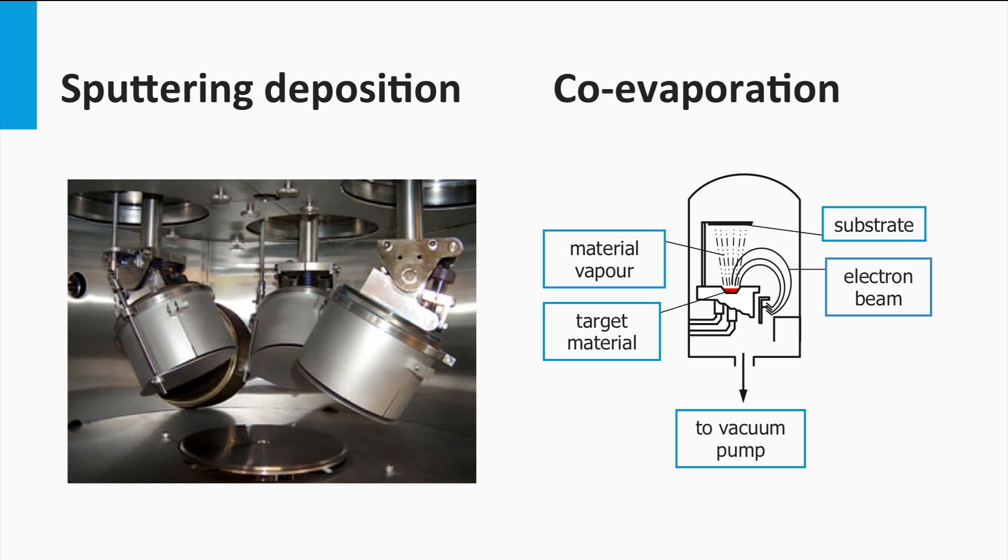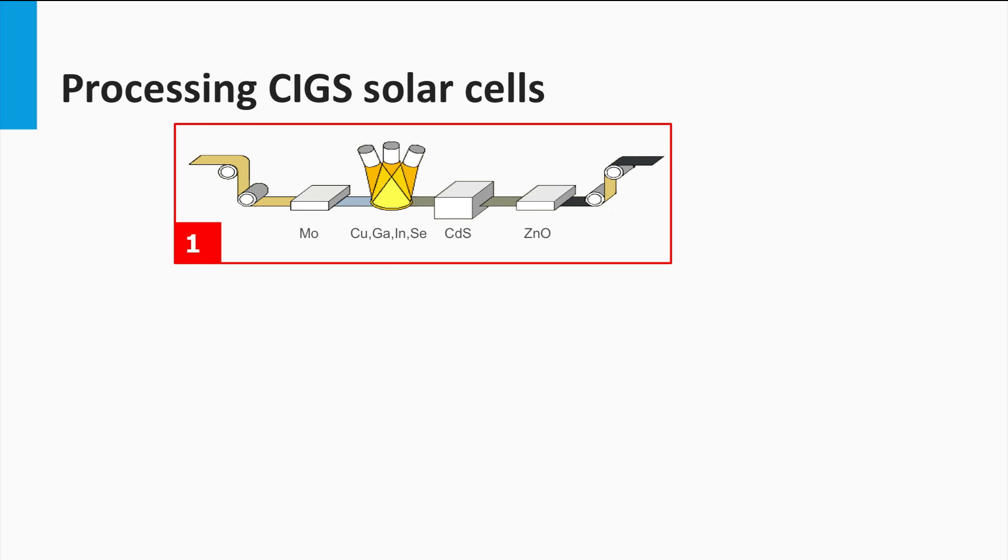The second approach is sputtering and co-evaporation on the substrate at room temperature. The deposited films on the cold substrate are thermally annealed in presence of a selenide vapor to form the final CIGS structure.